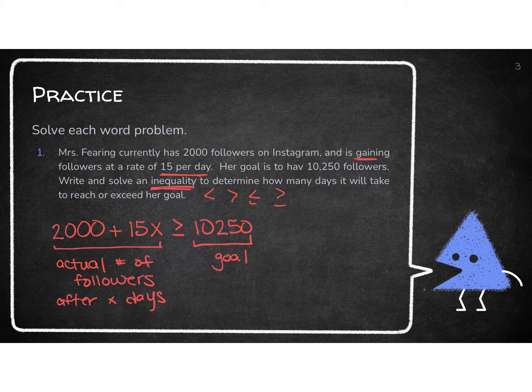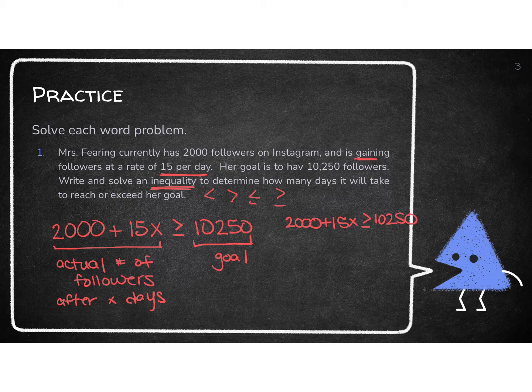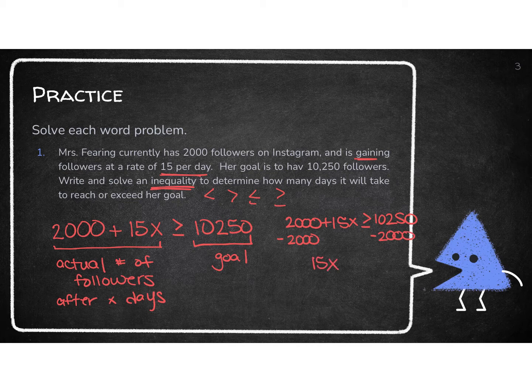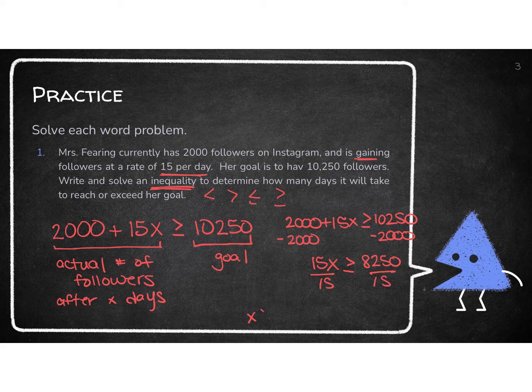So now we just have to go and we have to solve that goal. So I'm actually going to write it over here again. 2,000 plus 15X has to be greater than or equal to 10,250. So we're just going to solve. I need to get rid of whatever's being added or subtracted first. Well, I'm adding 2000. So I need to subtract that 2000. So if I do that, I get 15X is greater than or equal to 8,250. Divide by that 15 then. So I have X is greater than or equal to 550.